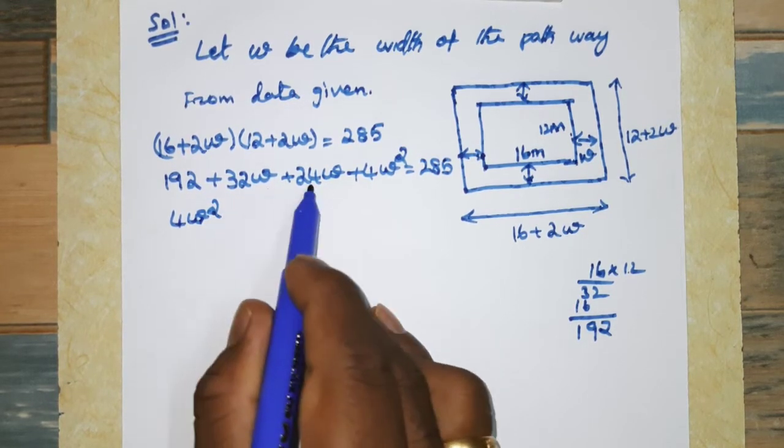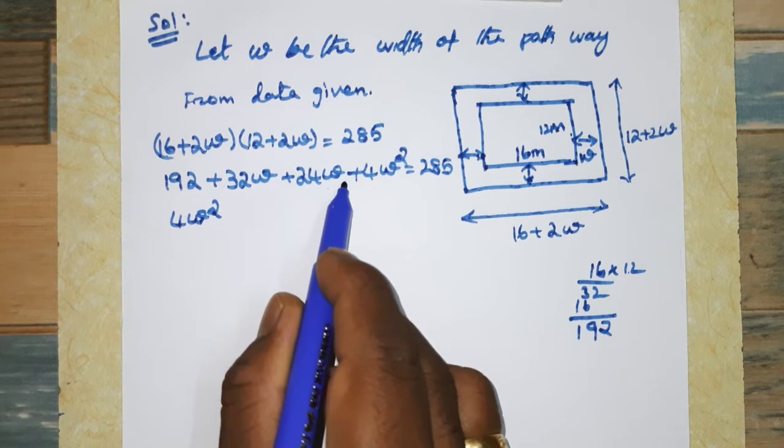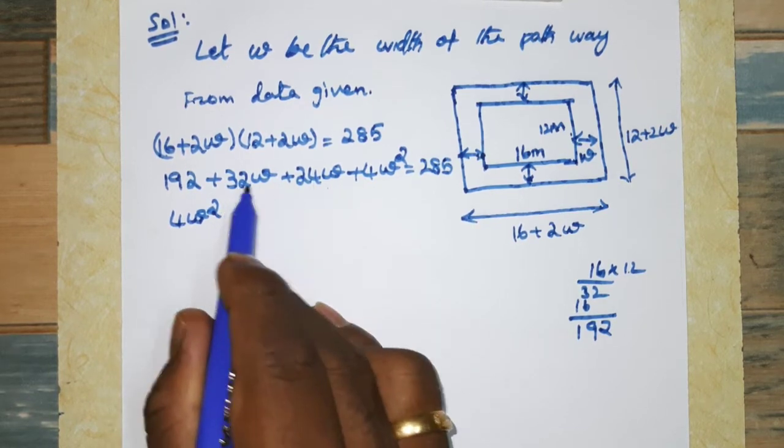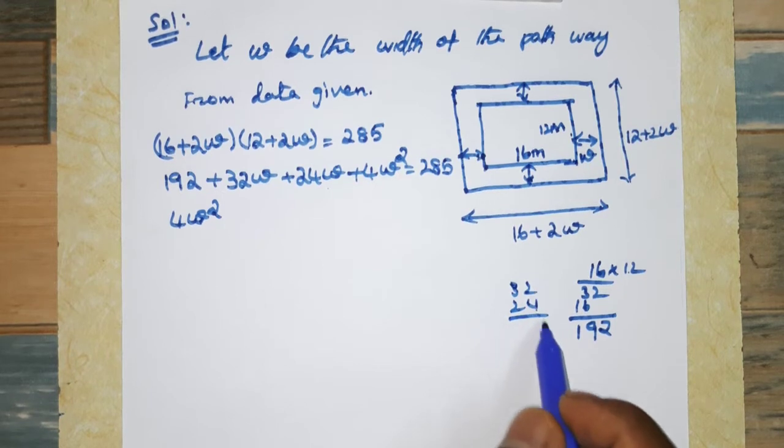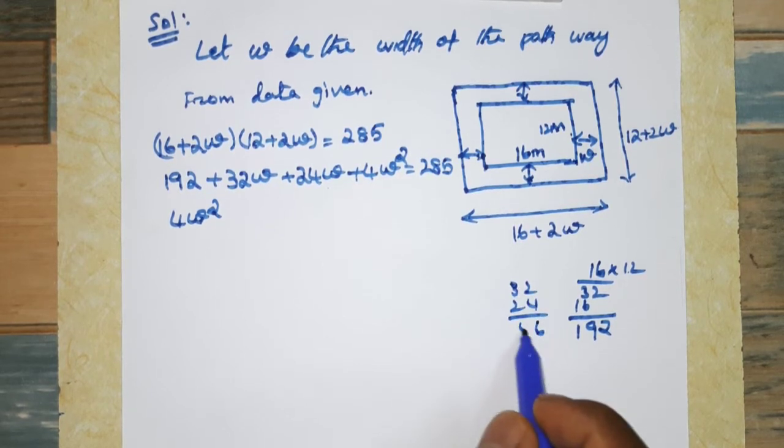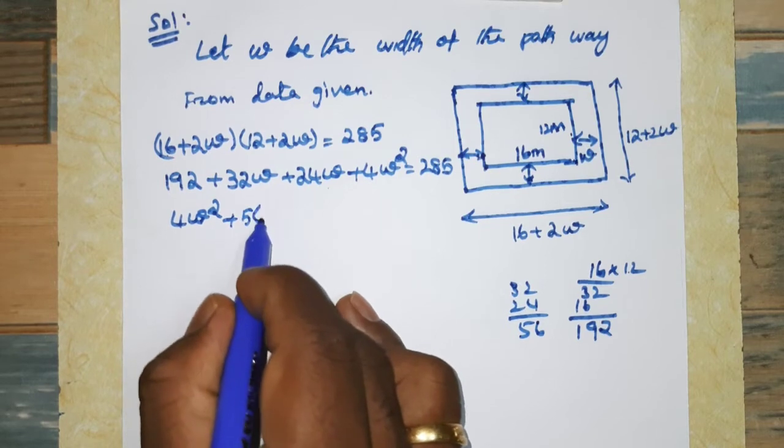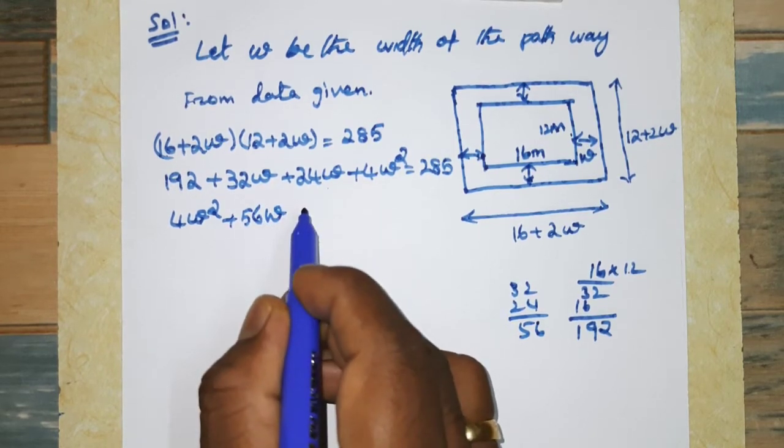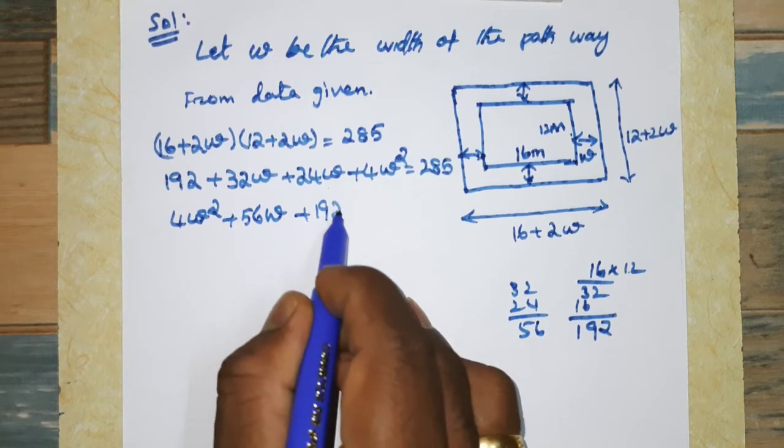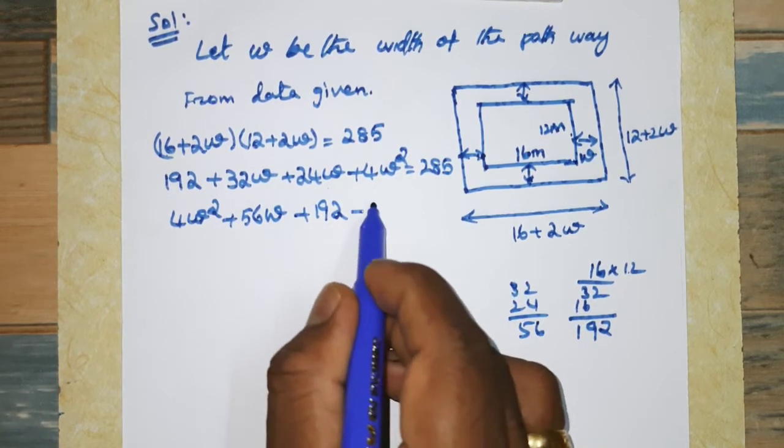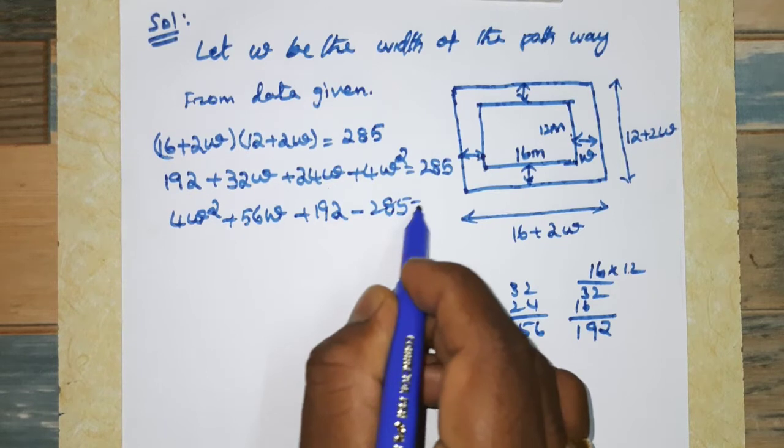Adding the W terms: 32W plus 24W equals 56W. So 4W² + 56W + 192 = 285. Subtracting 285 from both sides gives 4W² + 56W - 93 = 0.